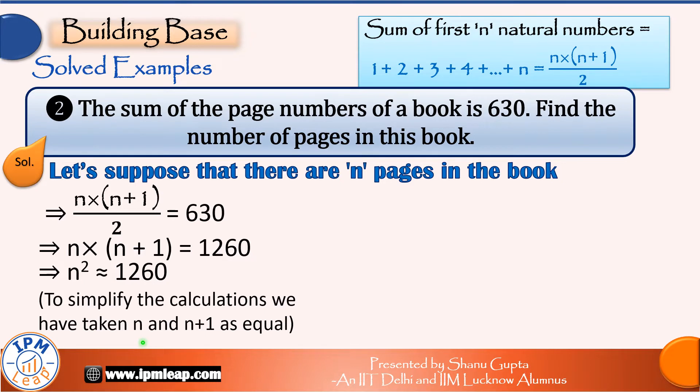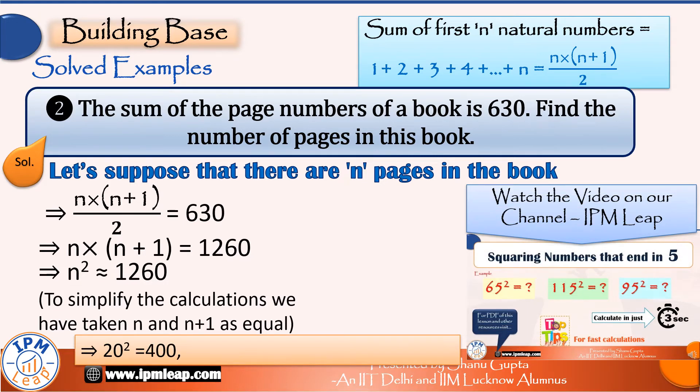To simplify the calculations, we can take n and n+1 as equal. Next we can quickly calculate the values of some easy squares starting with 20: 20² = 400, 30² = 900, 40² = 1600. Since this is a number between 900 and 1600, let's try 35². 35² = 1225. Again, you may watch this video to quickly find squares of numbers that end in 5.